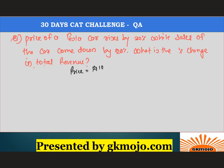Assume the price is rupees 100 and the sales are 100 units. Revenue will be price per unit multiplied by sales, that is 100 multiplied by 100, which equals 10,000.